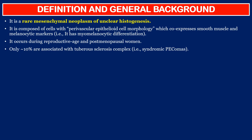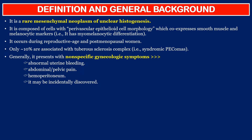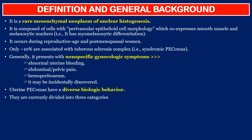That is syndromic PEComas. Generally, it presents with non-specific gynecologic symptoms such as abnormal uterine bleeding, abdominal pelvic pain, and hemoperitoneum. It may be incidentally discovered. Uterine PEComas, myomelanocytic tumors, have a diverse biologic behavior.